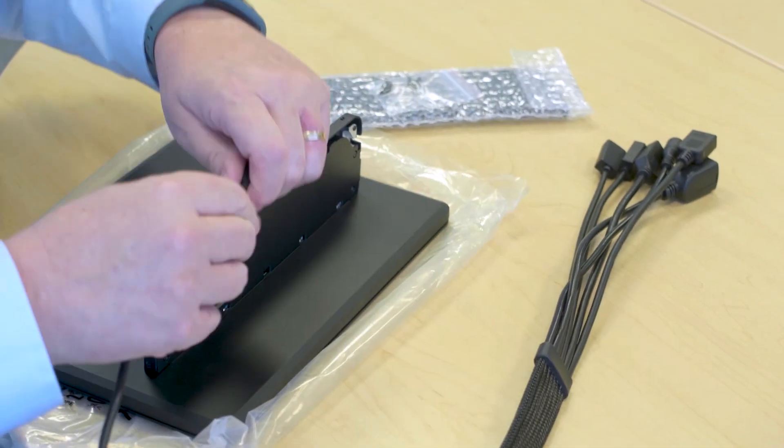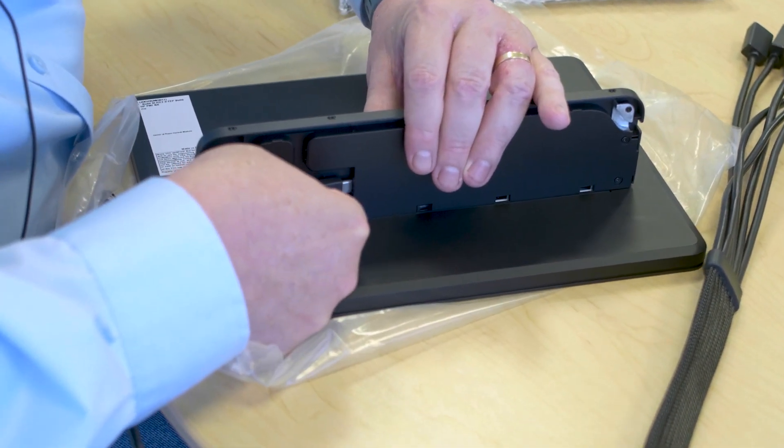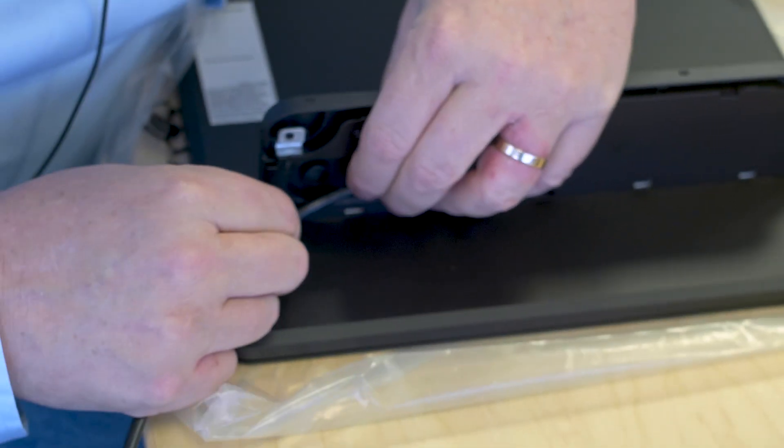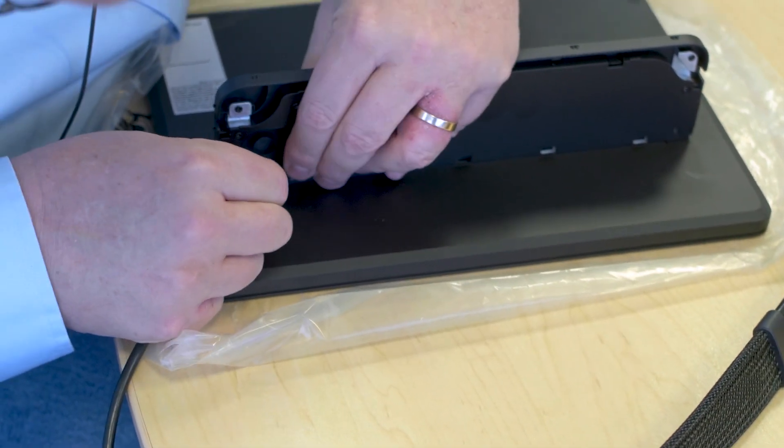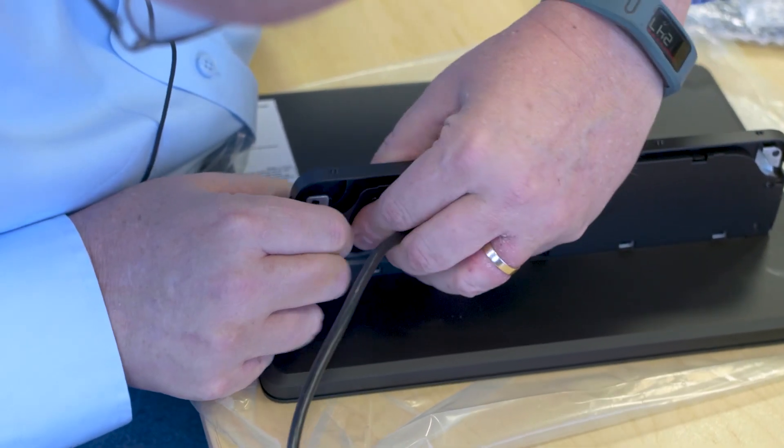So let's install that first. I plug the type C connector in first, then route it through the cable management of the center room control. It goes around in a little bit of a circle, and just push the cable in.